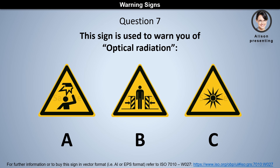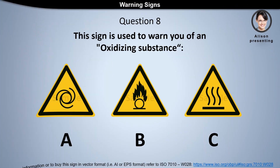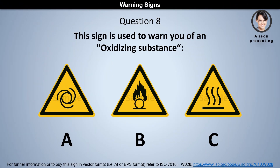Question 7: This sign is used to warn you of optical radiation. Is it a, b, or c? The answer is c.